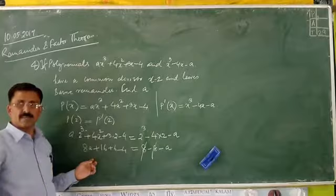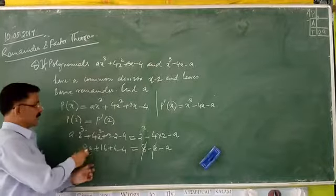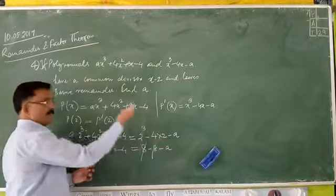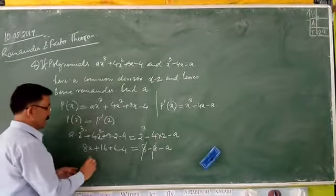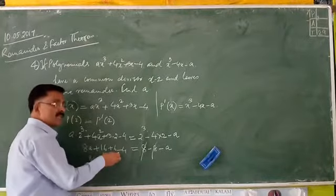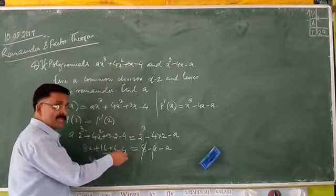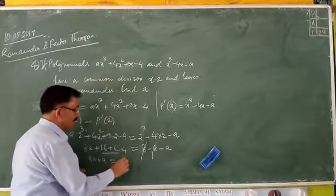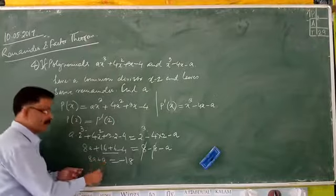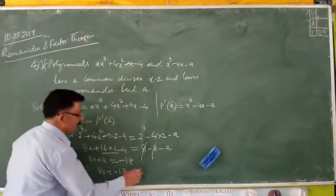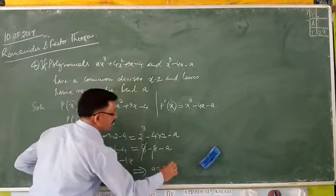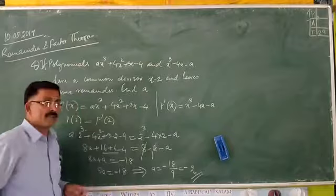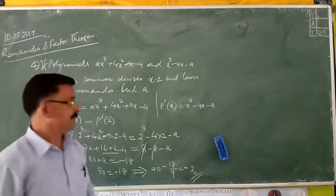Taking like terms together: 8A + A = 9A on one side. 16 + 6 − 4 = 18, which goes to the other side as −18. So 9A = −18, giving A = −2.